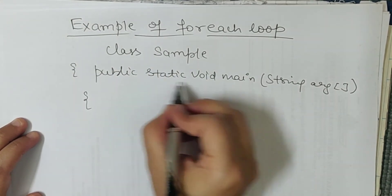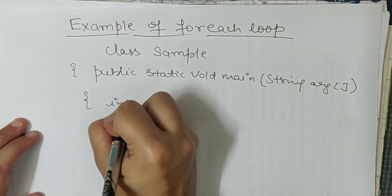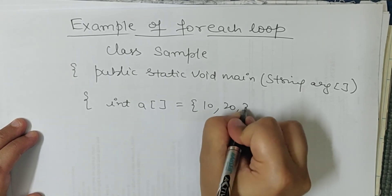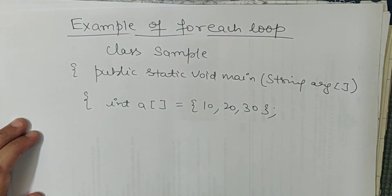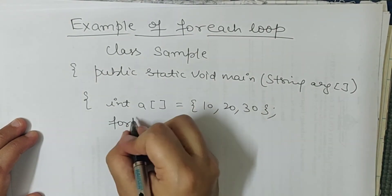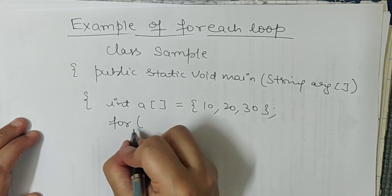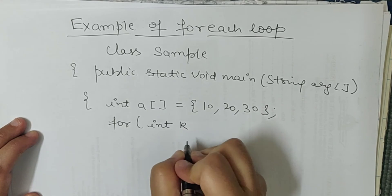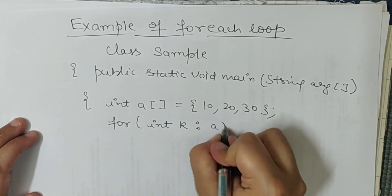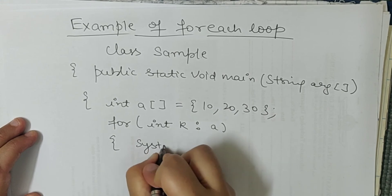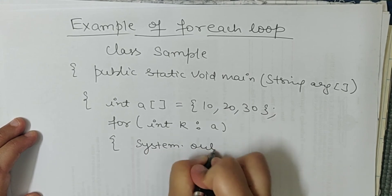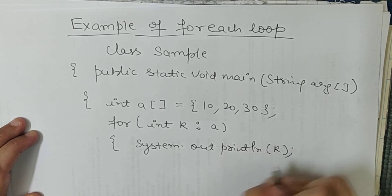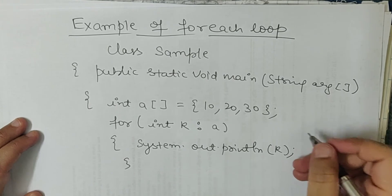Aao dekhte hain ek example for-each loop ka. Yeh maine ek class banayi hai, main method ke andar main ek array le rahi hoon, aur array mein values bhi de di hain — say suppose 10, 20, 30. Array initialize kar diya. Uske baad for-each loop lagaya hai. Usme data type variable name say suppose maine 'k' rakha hai, colon, aur array ka naam. Mujhe print karna hai toh system.out.println(k) likh diya.